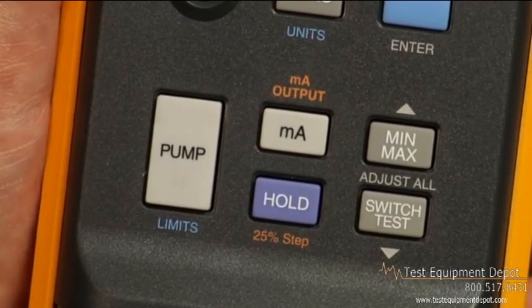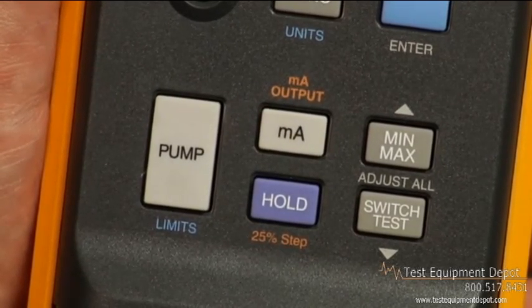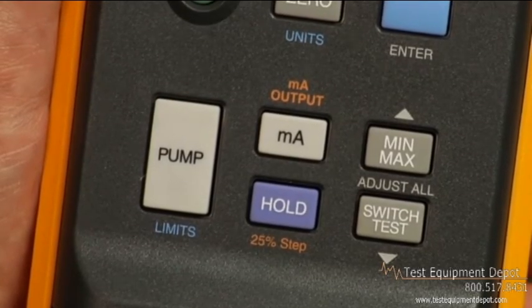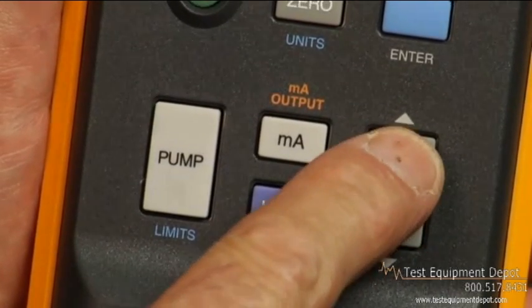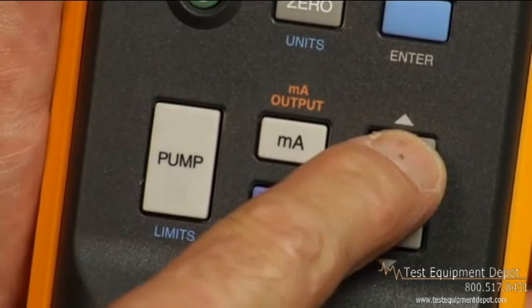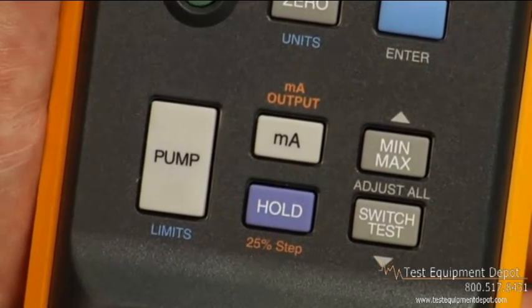Besides all the pressure measurement features, the 719 includes a fully functional loop calibrator with milliamp source, simulate, and a loop power supply to power transmitters while measuring the milliamp signal.